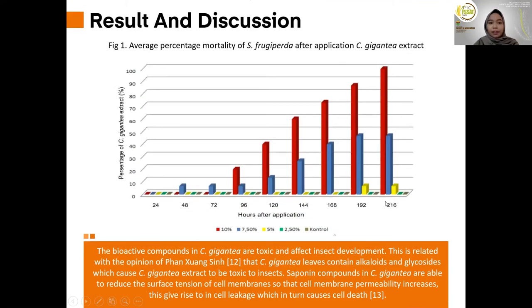Result and Discussion. Figure 1 shows the average percentage mortality of Spodoptera frugiperda after application of C. gigantea extract. On day 9 after application, concentration 10% showed mortality up to 100%. At concentration 7.5%, it reached 46.67%. At a concentration of 5%, it reached 6.67%, while at 2.5% and control showed no mortality of Spodoptera frugiperda larvae.